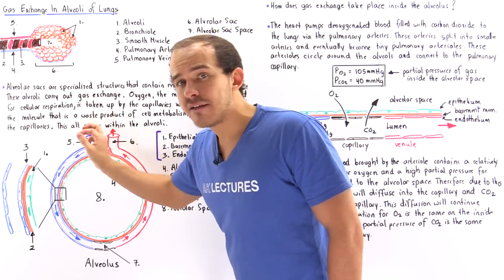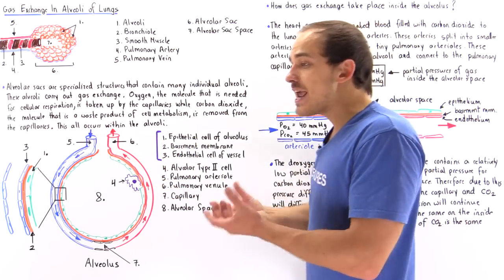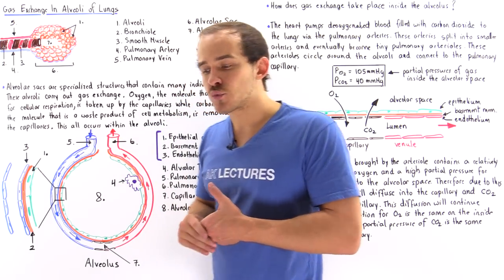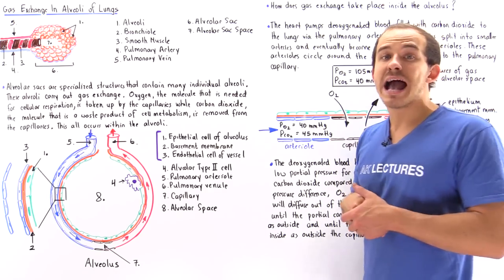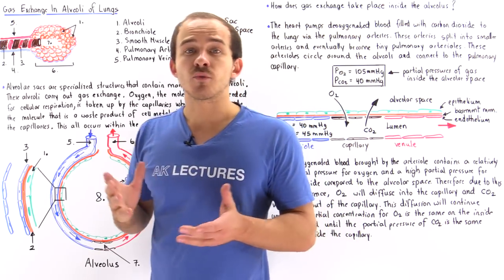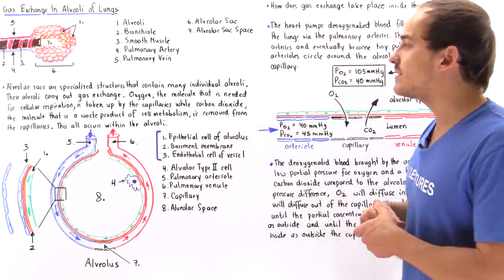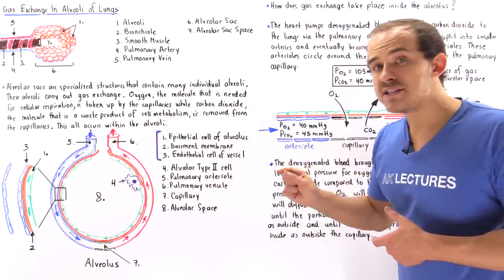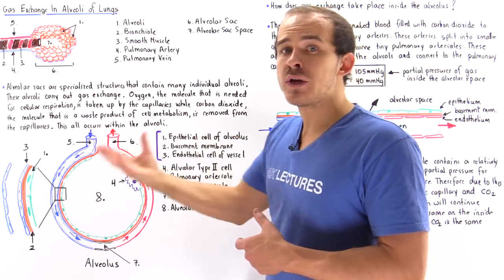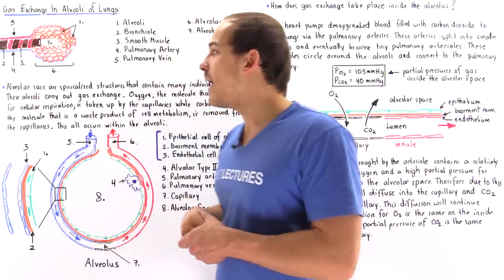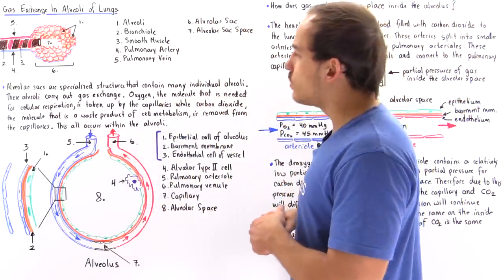Within these alveoli is where gas exchange actually takes place — we exchange oxygen for carbon dioxide. Oxygen is a very important molecule used by our individual cells in the process of cellular respiration to produce ATP, the energy molecules used by the cell. Carbon dioxide is a waste product of cellular metabolism that we must excrete to the outside of our body, and this is what happens inside our lungs, specifically inside each alveolus.